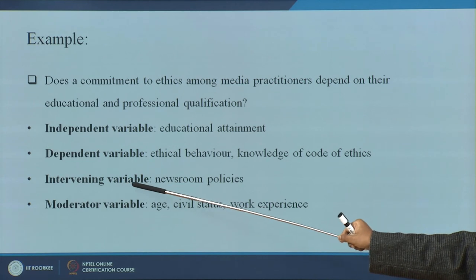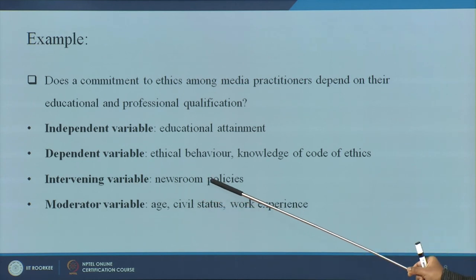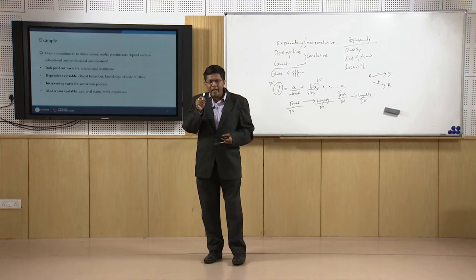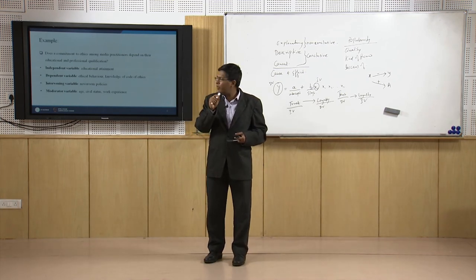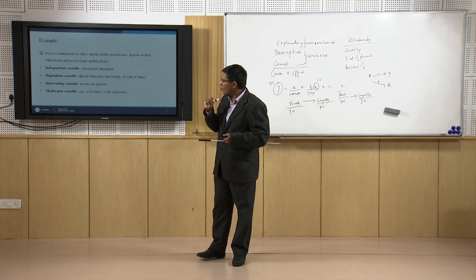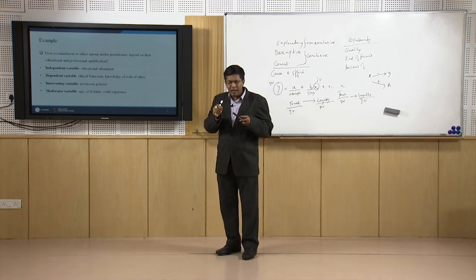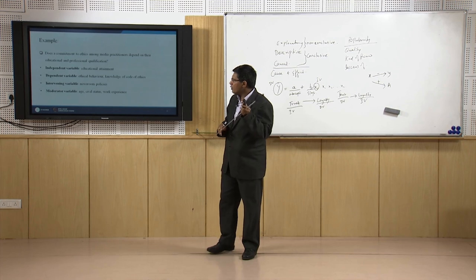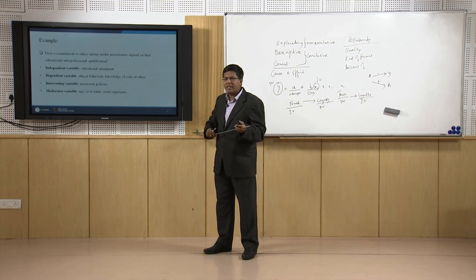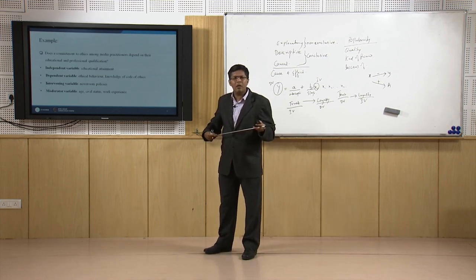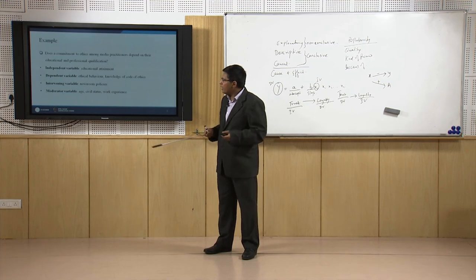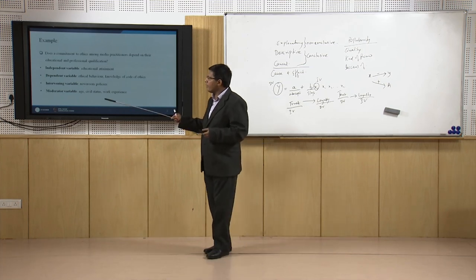The intervening variable — intervening variables are those which interfere and bring a change in the relationship. They are not exactly a moderator, but they bring a change. For example, the policy of the company — what policies they follow — could be an intervening variable.